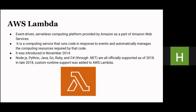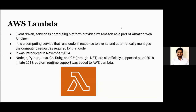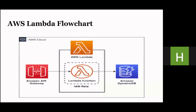Another component is AWS Lambda. It is an event-driven, serverless computing platform provided by Amazon. It is a computing service that runs code in response to an event, automatically manages the required computing resources, and can support multiple languages. In the Lambda flow, the API Gateway invokes the Lambda function, and the Lambda function triggers Amazon DynamoDB.